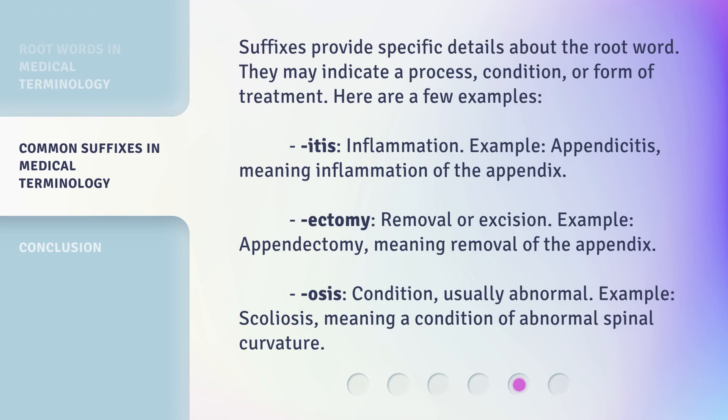Suffixes provide specific details about the root word. They may indicate a process, condition, or form of treatment. Here are a few examples. '-itis' means inflammation — for example, 'appendicitis,' meaning inflammation of the appendix. '-ectomy' means removal or excision — for example, 'appendectomy,' meaning removal of the appendix. '-osis' means condition, usually abnormal — for example, 'scoliosis,' meaning a condition of abnormal spinal curvature.